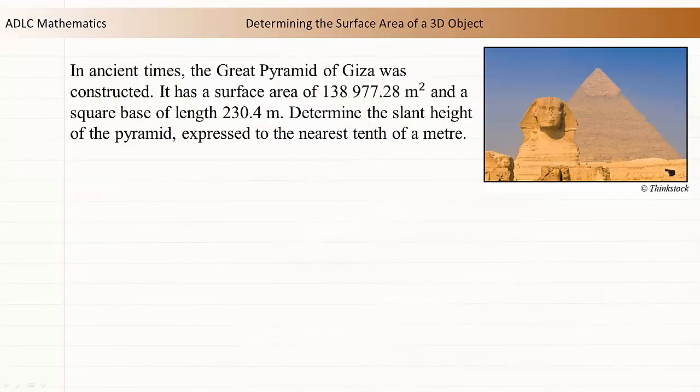In ancient times, the Great Pyramid of Giza was constructed. It had a surface area of 138,977.28 m² and a square base of length 230.4 m. Determine the slant height of the pyramid, expressed to the nearest tenth of a meter.